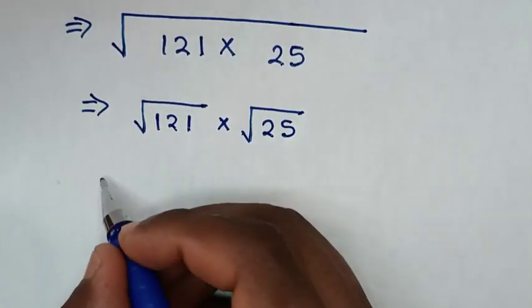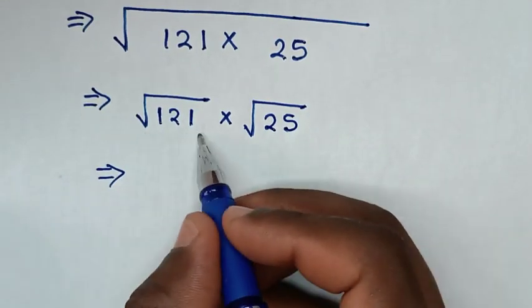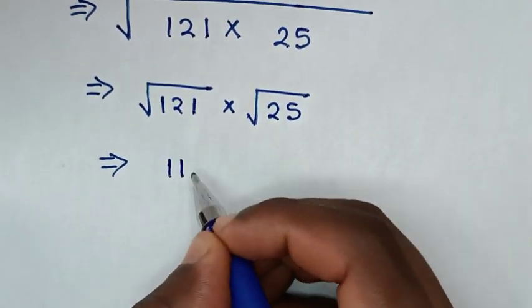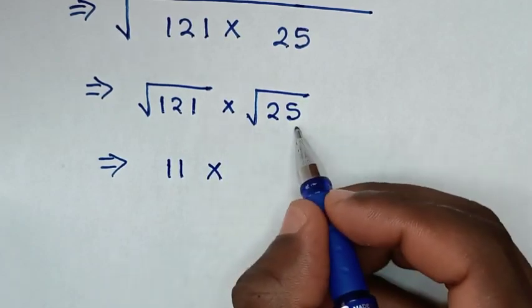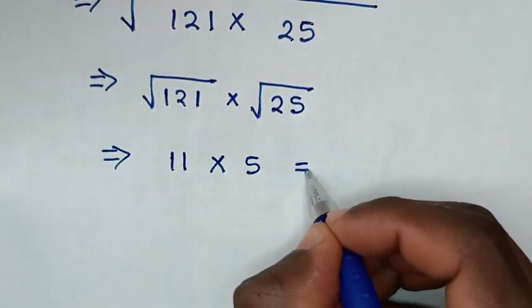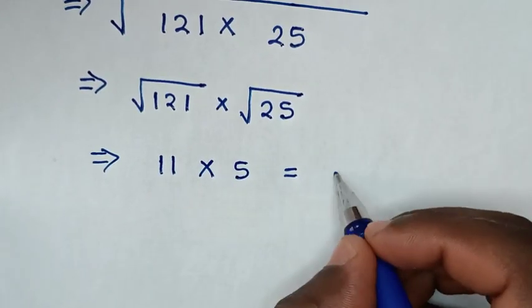Then it will be, square root of 121 is 11, times square root of 25 is 5, which is equal to 11 times 5 is 55.